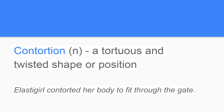Word number 2 is contortion. Contortion is a noun, meaning a tortuous and twisted shape or position. For example, Elastigirl contorted her body to fit through the gate.